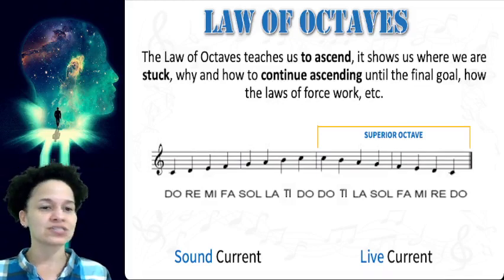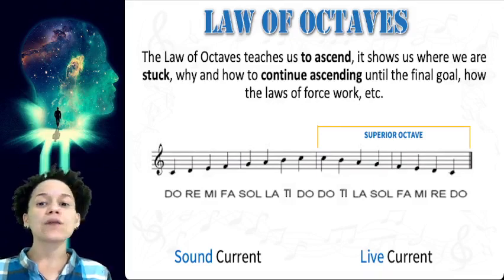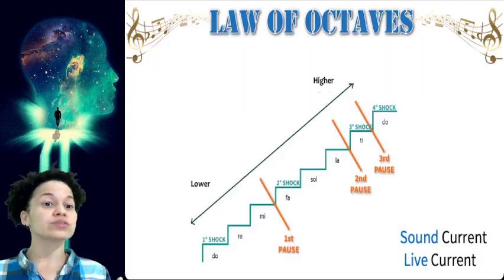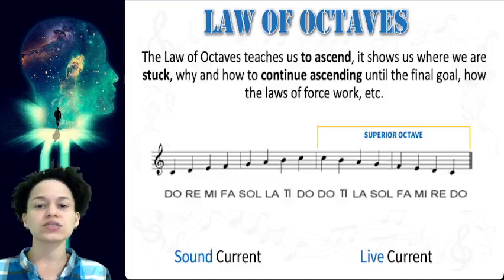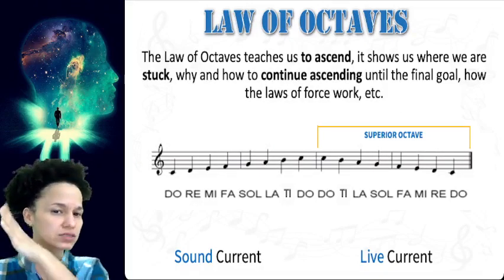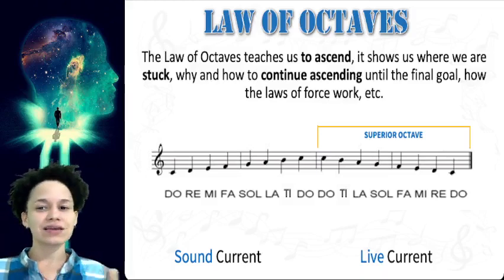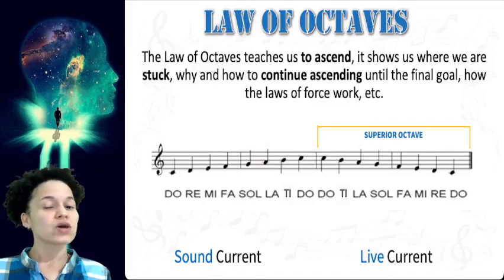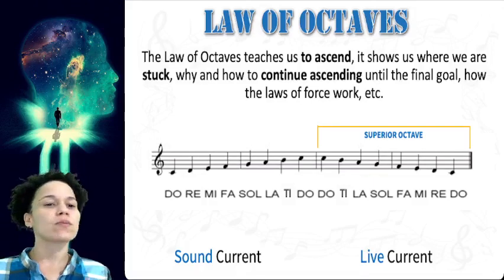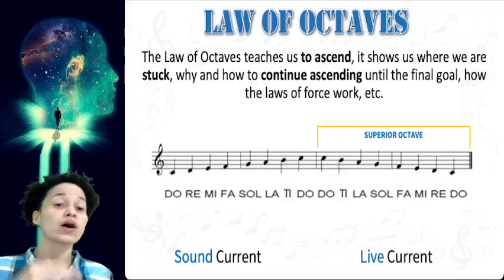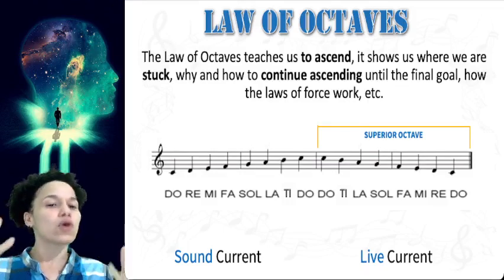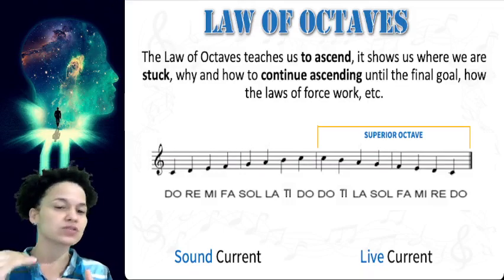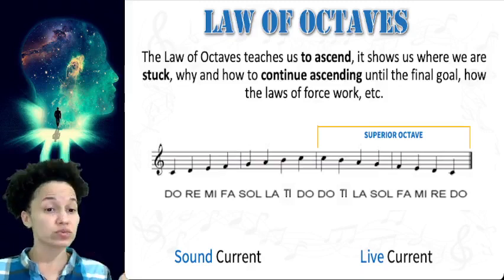If we observe the musical scale, we will see the seven musical notes — DO, RE, MI, FA, SOL, LA, TI, DO — that correspond to a musical octave. To go from a lower DO to a higher DO it is necessary to rise one octave, passing a whole set of seven notes. It is interesting to observe how all human beings and all of our processes and projects are subject to this same vibratory scale, which is the current of life.